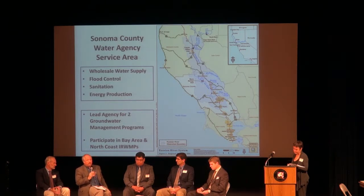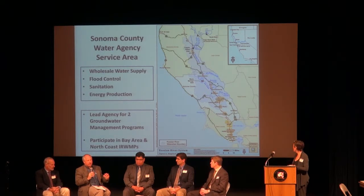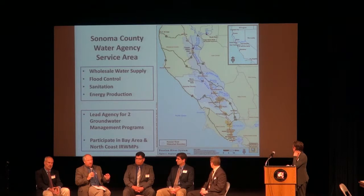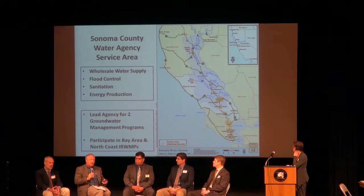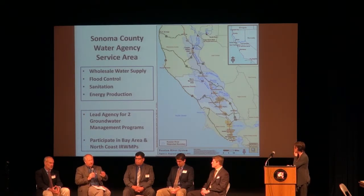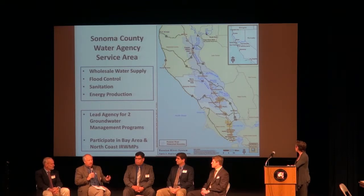We basically have four things we do. We manage wholesale water supply for over 650,000 people. As part of that, we manage the Russian River Basin and operate two reservoirs in conjunction with the Corps of Engineers, maintaining water supply and minimum in-stream flows. We also provide flood control services, manage eight sanitation districts, and do power generation. The services Ellen was talking about in terms of integrated water management — we're well-positioned to do that, and we have many programs underway working with partners to implement regional water management programs.